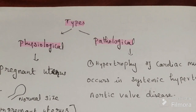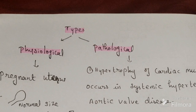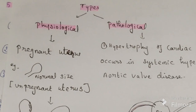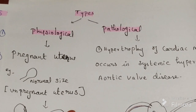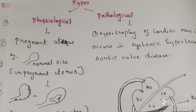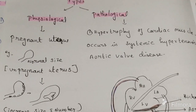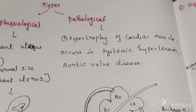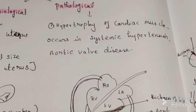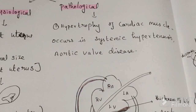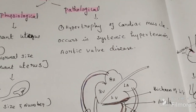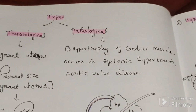There are two types of hypertrophy: physiological and pathological. Pregnancy of the uterus is a common example seen in both hypertrophy and hyperplasia — both increasing in size and in number. A pathological example is hypertrophy of cardiac muscles, which occurs in systemic hypertension or aortic valve disease.